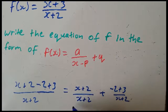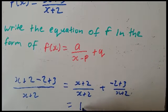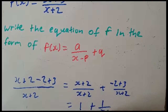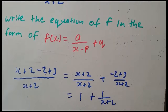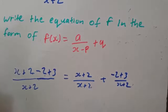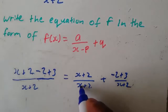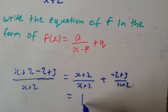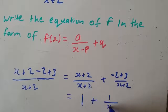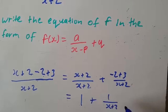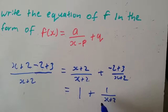The same thing over the same thing is always 1. So (x + 2)/(x + 2) = 1. Then −2 + 3 is positive 1, so we get 1/(x + 2). Notice the standard form is already appearing, so we just have to rearrange. Again, the same thing over the same thing is 1, and −2 + 3 = +1, giving us positive 1/(x + 2).